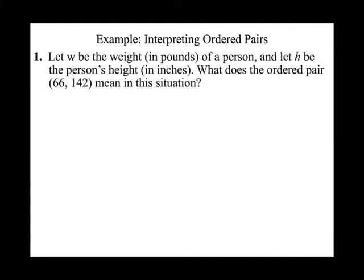Interpreting ordered pairs: in the rectangular coordinate system, the first value of the ordered pair represents X, the explanatory variable, and the second represents Y, the response variable. For example, let W be the weight in pounds and H be the height in inches. What does the ordered pair (66, 142) mean in this situation?